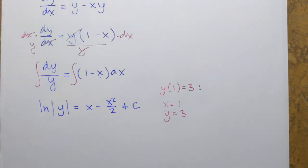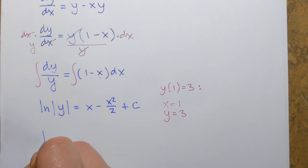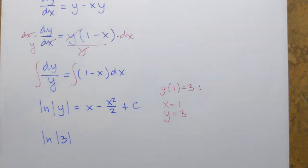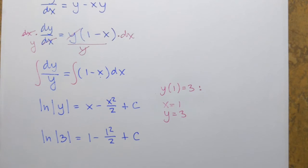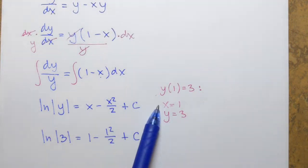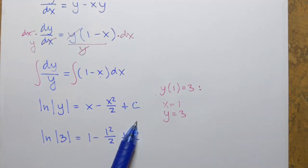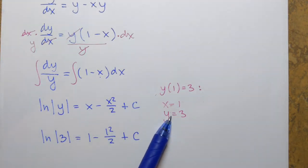So I'm going to plug in 3 for y. ln of absolute value of 3 which is just 3 equals 1 minus 1 squared over 2 plus c. So my goal right now is to find the specific value of this constant c and then I will replace it here such that I will obtain a particular function, particular solution that will be satisfying this condition.